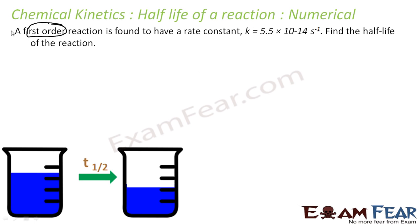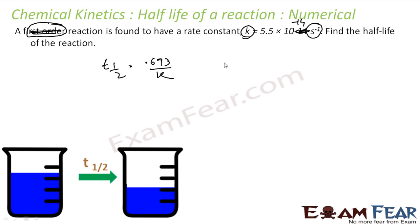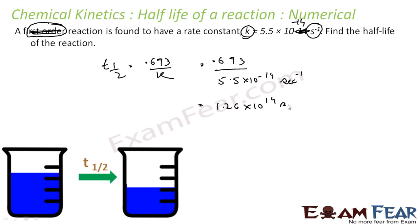Numerical example: a first-order reaction has a rate constant K = 5.5 × 10⁻¹⁴ per second. You can tell it's first order just from the units. Find the half-life. Using T½ = 0.693 / K = 0.693 / (5.5 × 10⁻¹⁴) = 1.26 × 10¹³ seconds. That is the time for the concentration to become half.